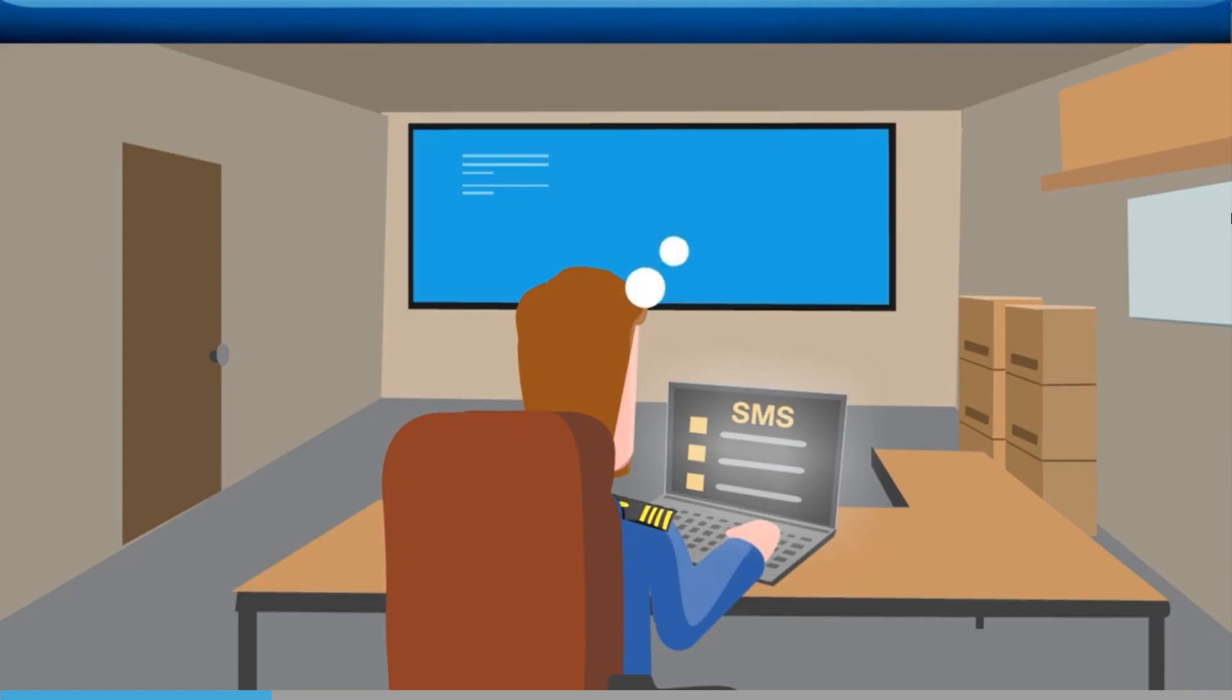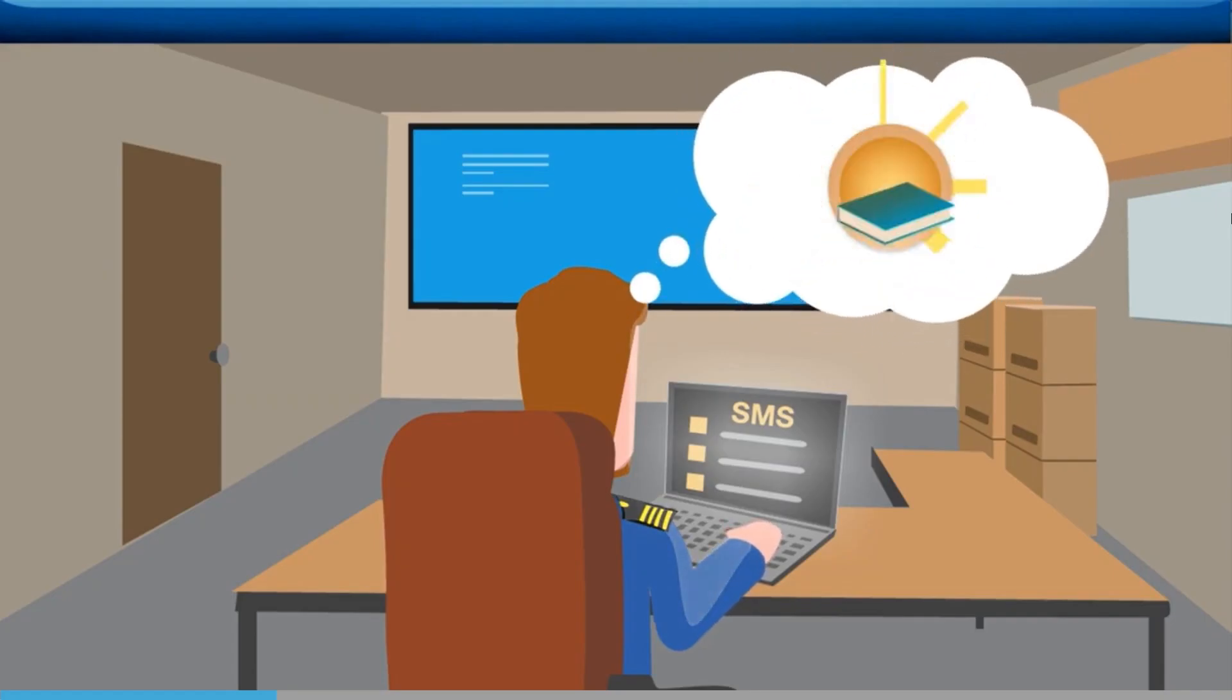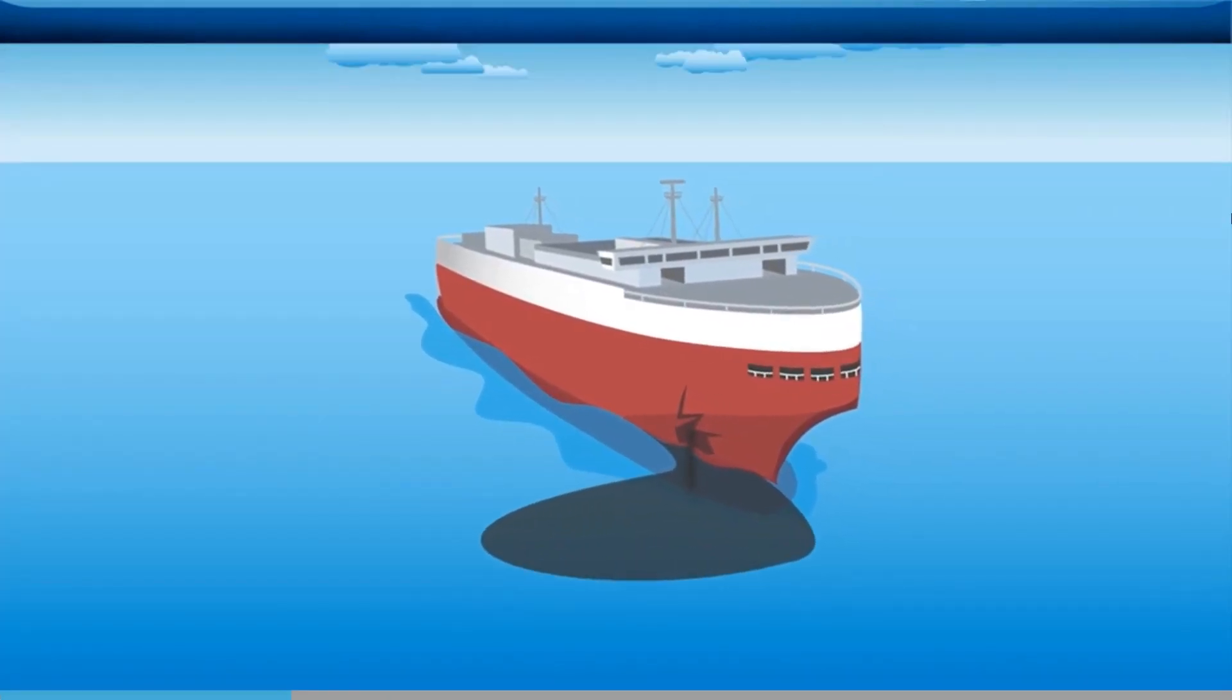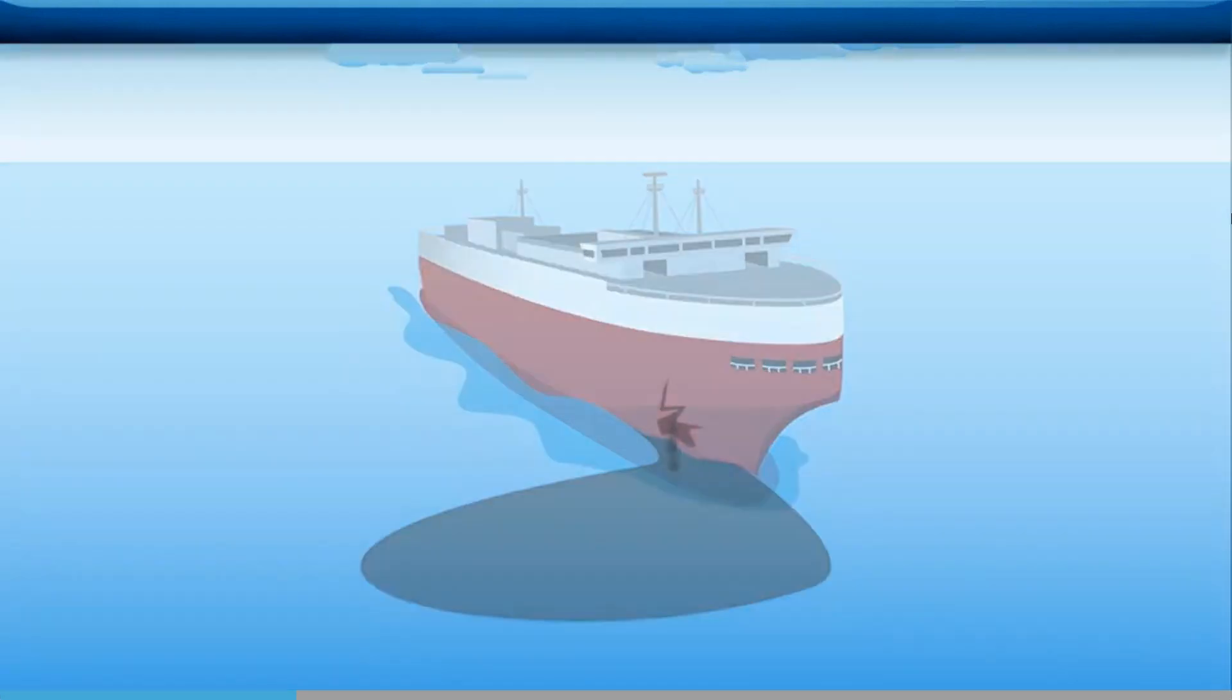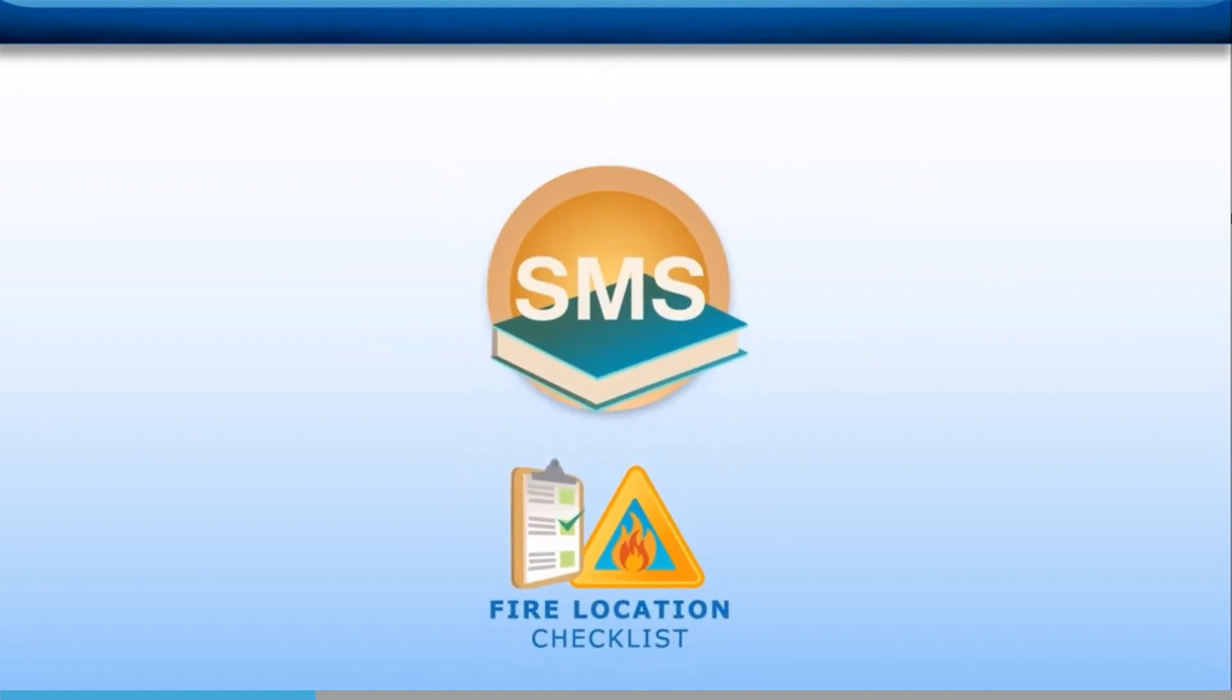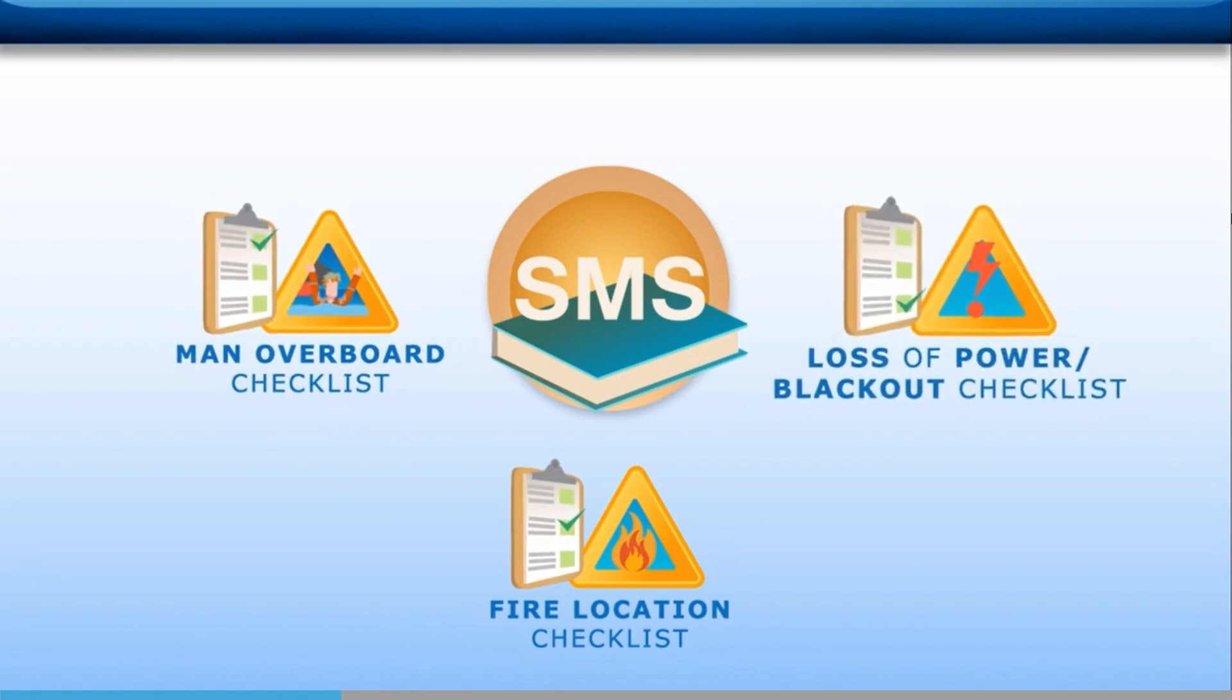In case of emergencies, checklists should be used as memory aids. In these types of situations, everyone is under stress, so extra care needs to be taken to ensure important tasks aren't missed. Examples include the fire location checklist, specifying the actions to be taken for fires in different locations, the man overboard checklist, and the loss of power or blackout checklist.